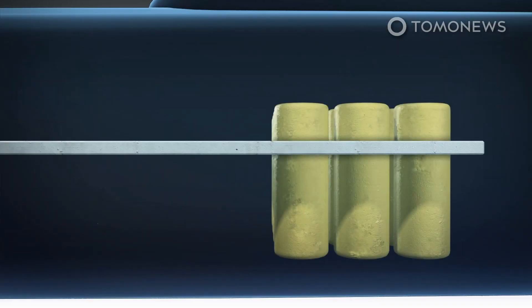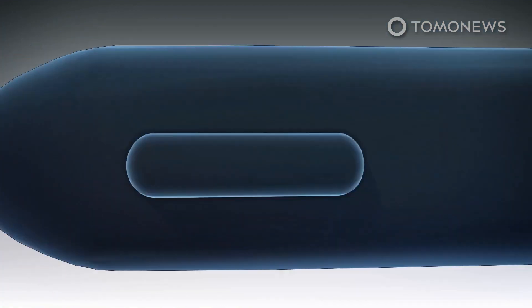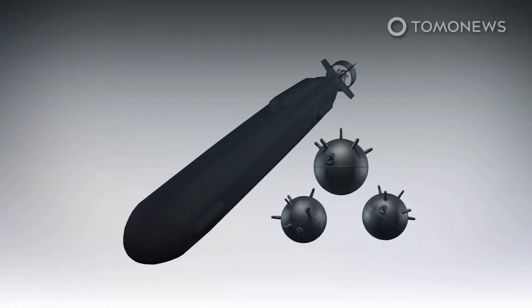According to Forbes, the Orca autonomous drone is a diesel-electric submarine with a payload bay that could carry mines and a control unit located in the forward section.